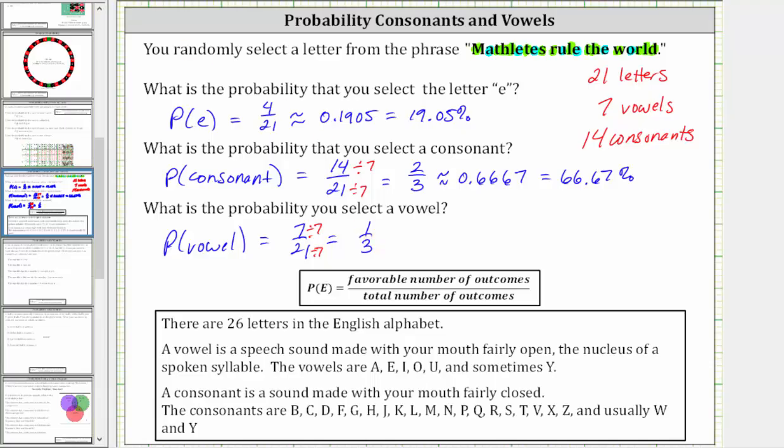We should recognize 1/3 as a decimal is 0.3 repeating, which to four decimal places is 0.3333, which as a percentage is 33.33%.